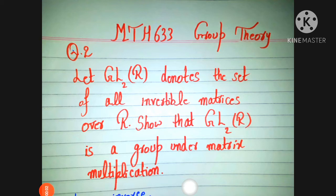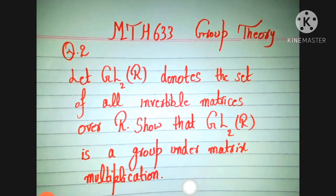Question number 2 mein suppose kiya gaya hai ke general linear group of degree 2 denote karta hai tamam invertible matrices ko over ℝ, aur isme show karna hai ke general linear group of degree 2 over ℝ is a group under matrix multiplication.